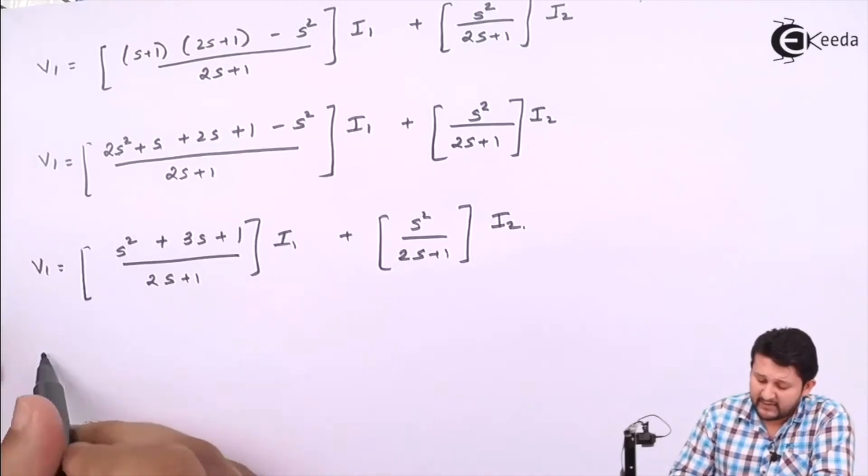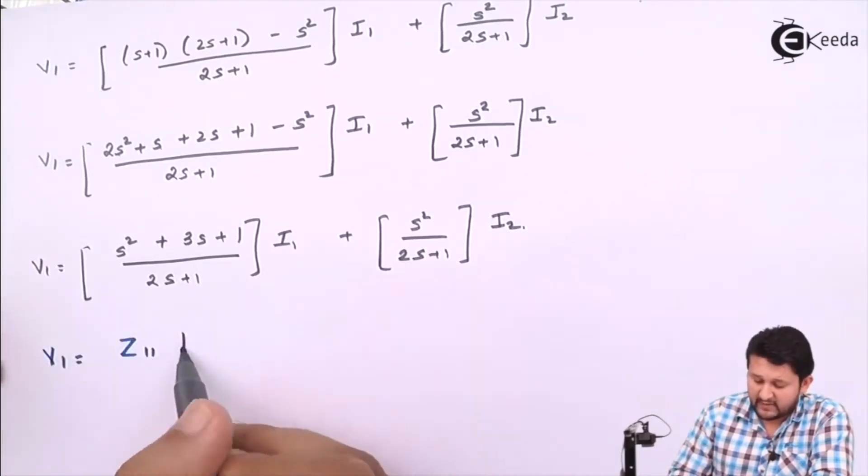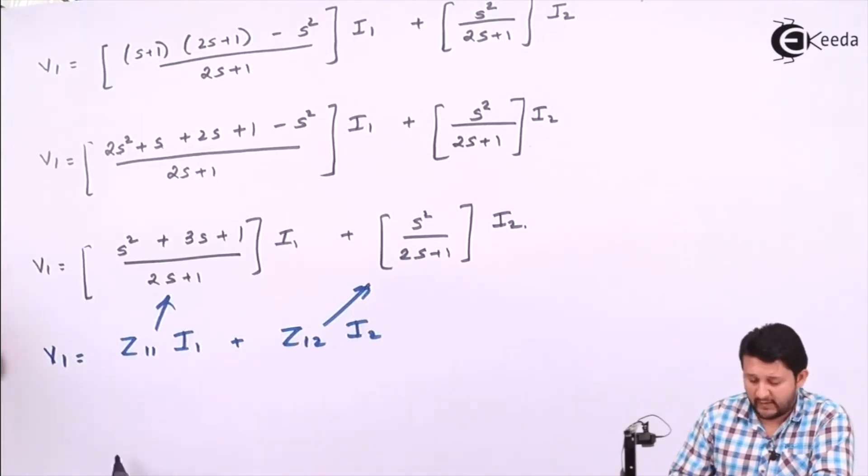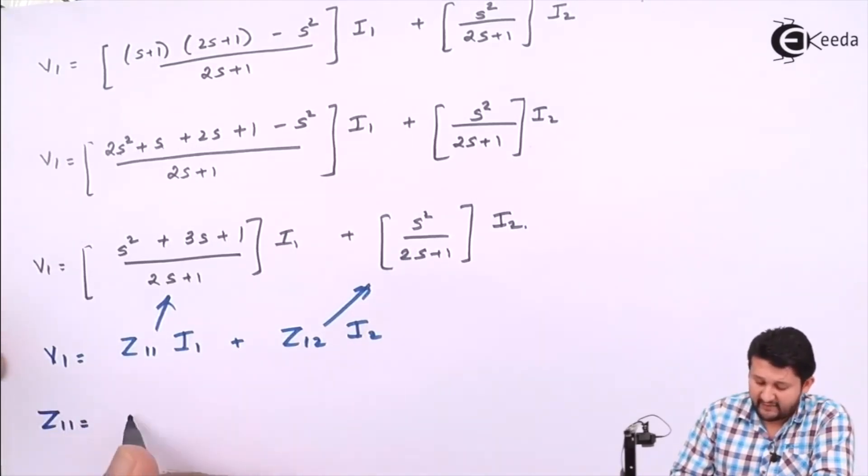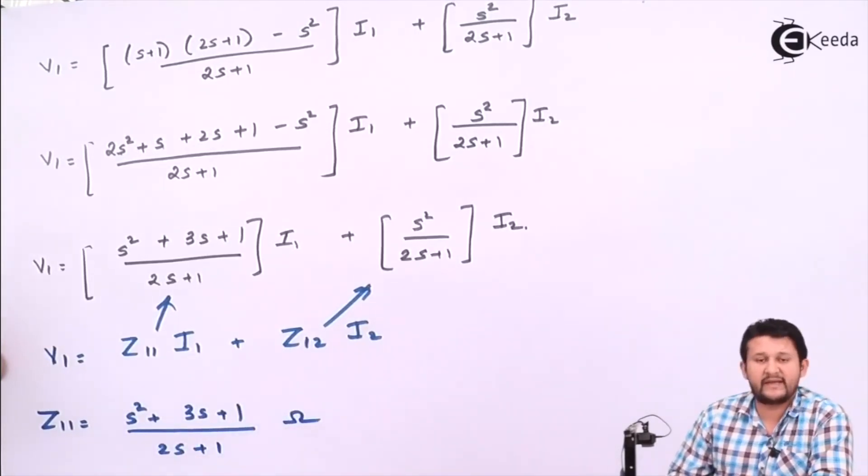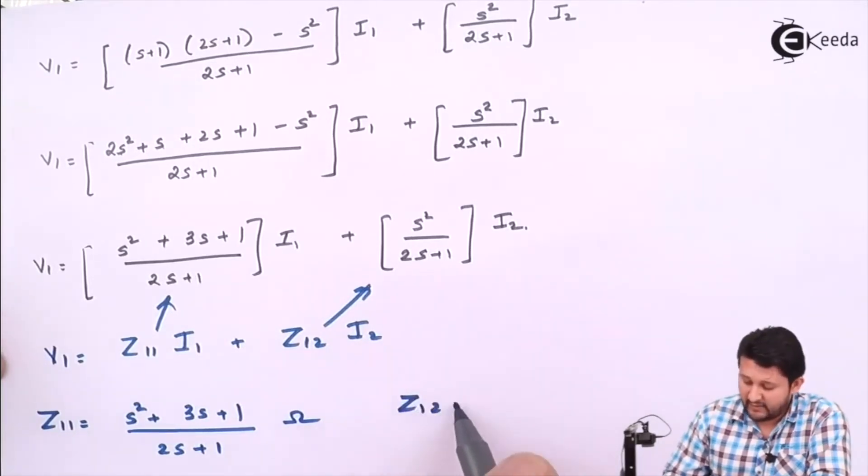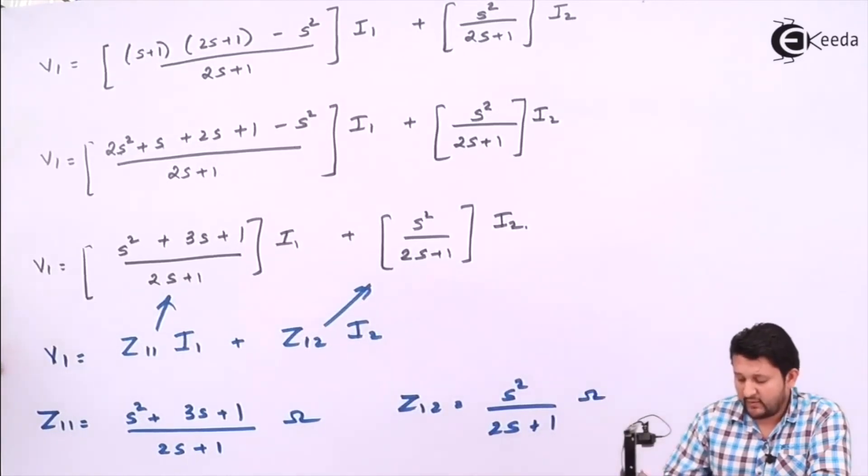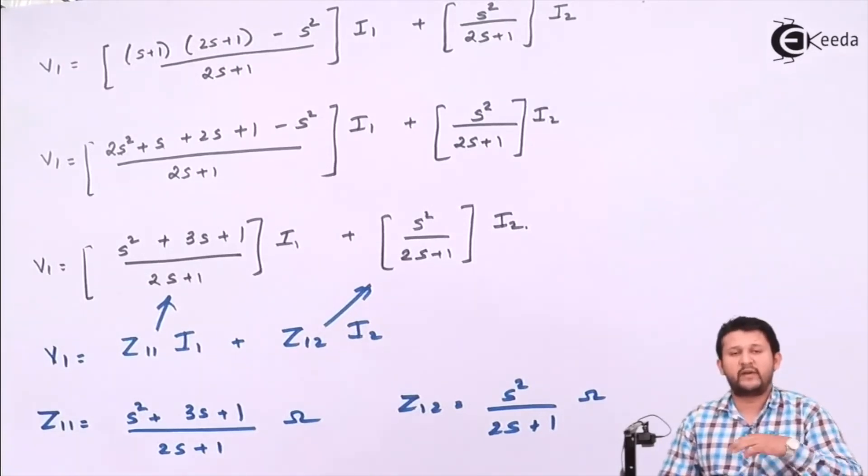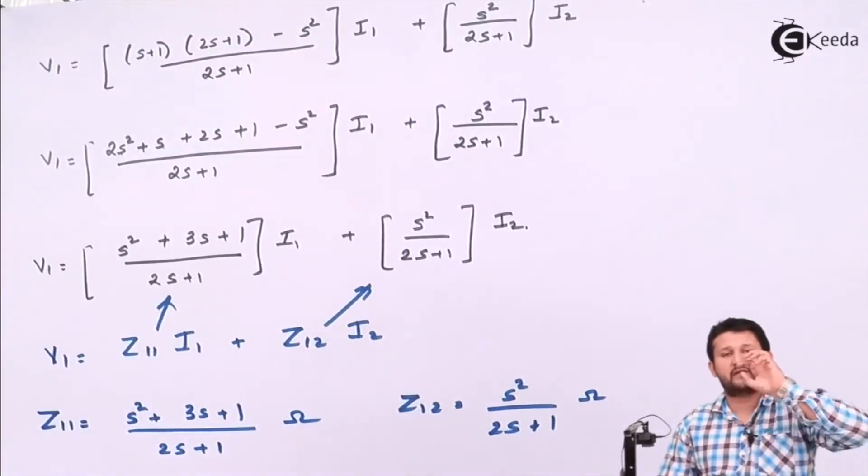So ultimately, if I solve again, you have V1 in terms of I1 and I2. Let's compare it with the standard equation: V1 = Z11·I1 + Z12·I2. Now compare, so you got the value for Z11 and Z12. So your Z11 is (s² + 3s + 1)/(2s+1), and Z12 is s²/(2s+1).